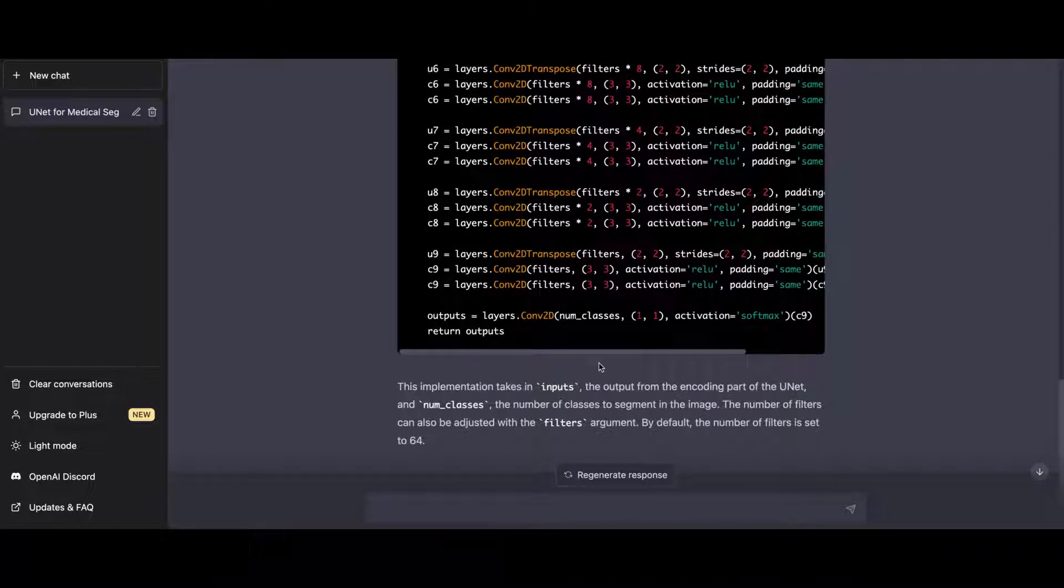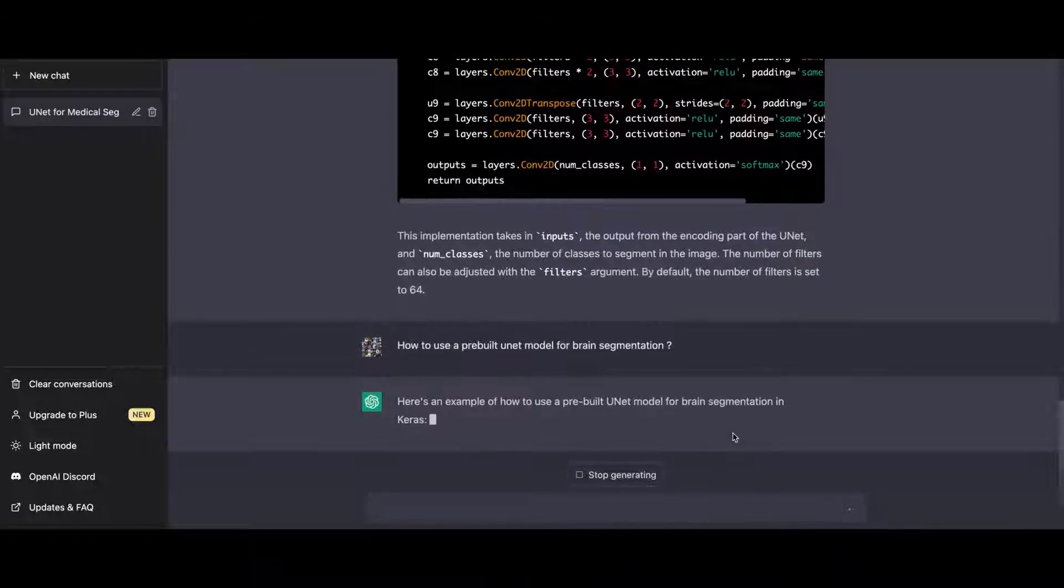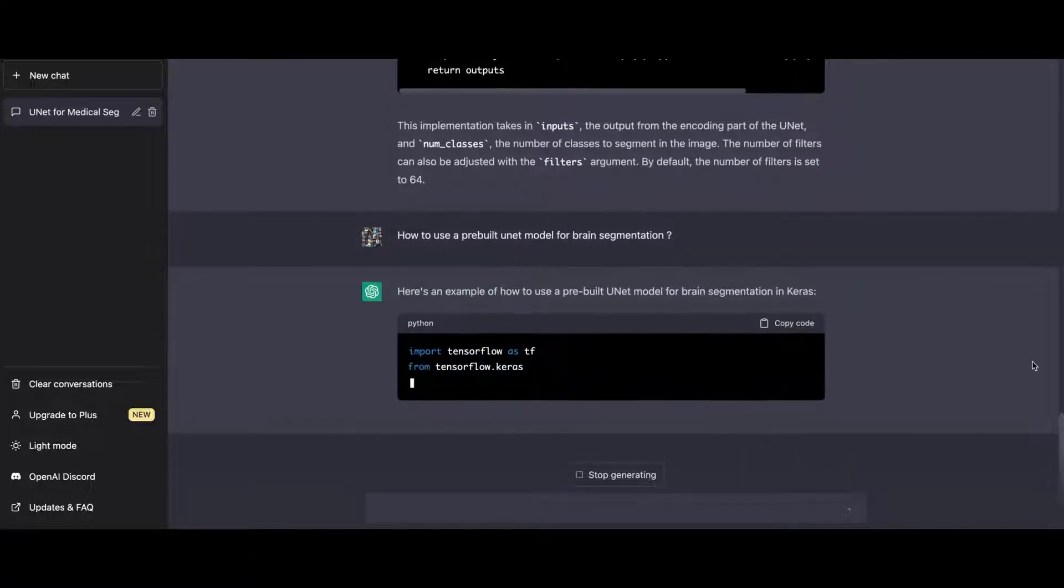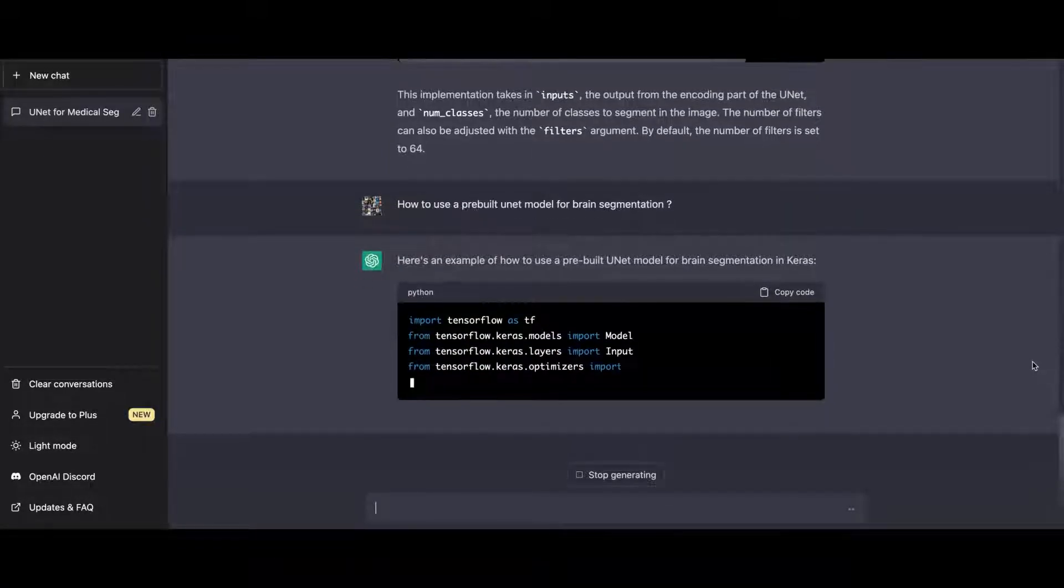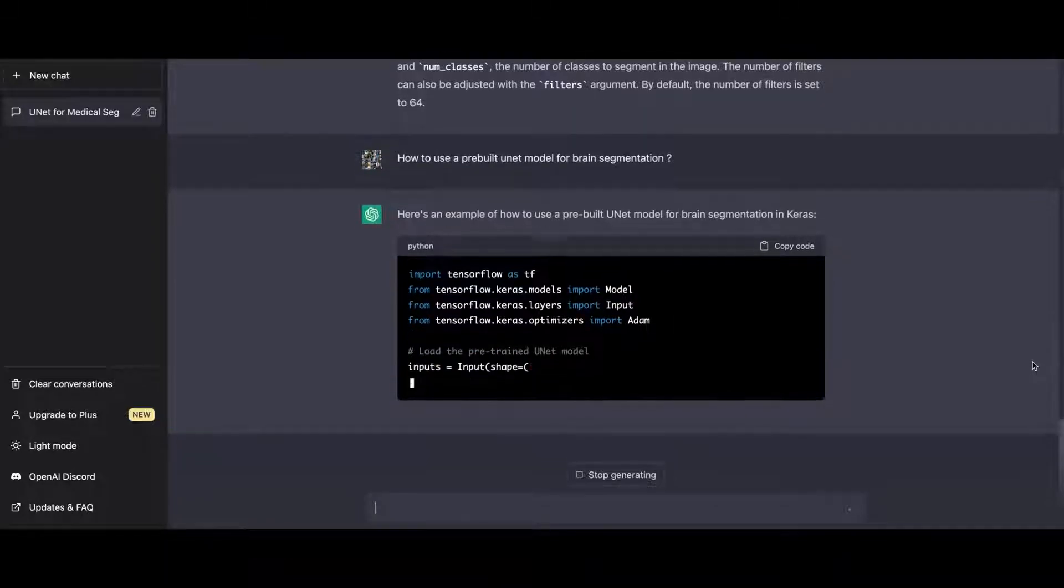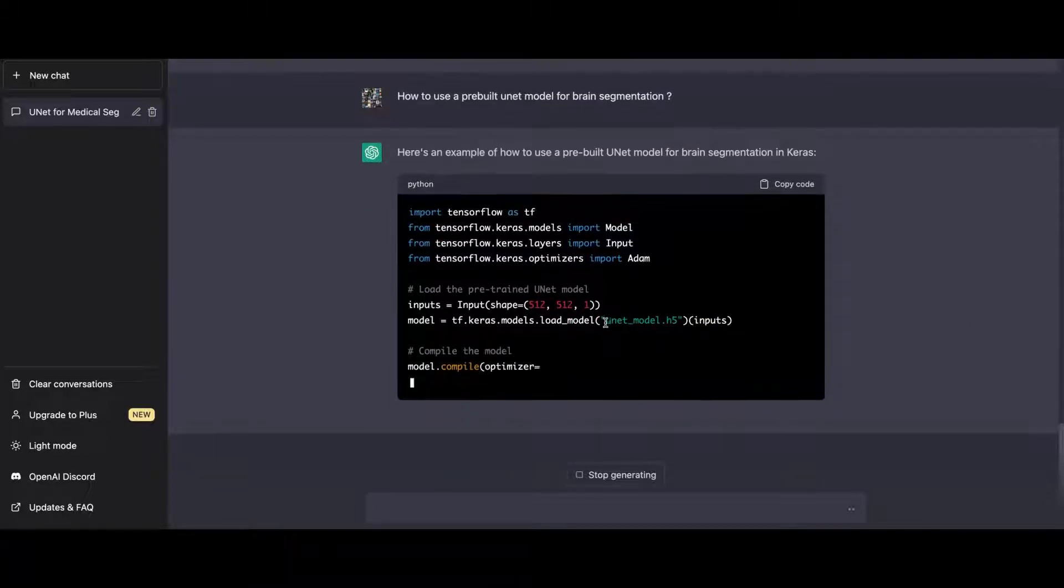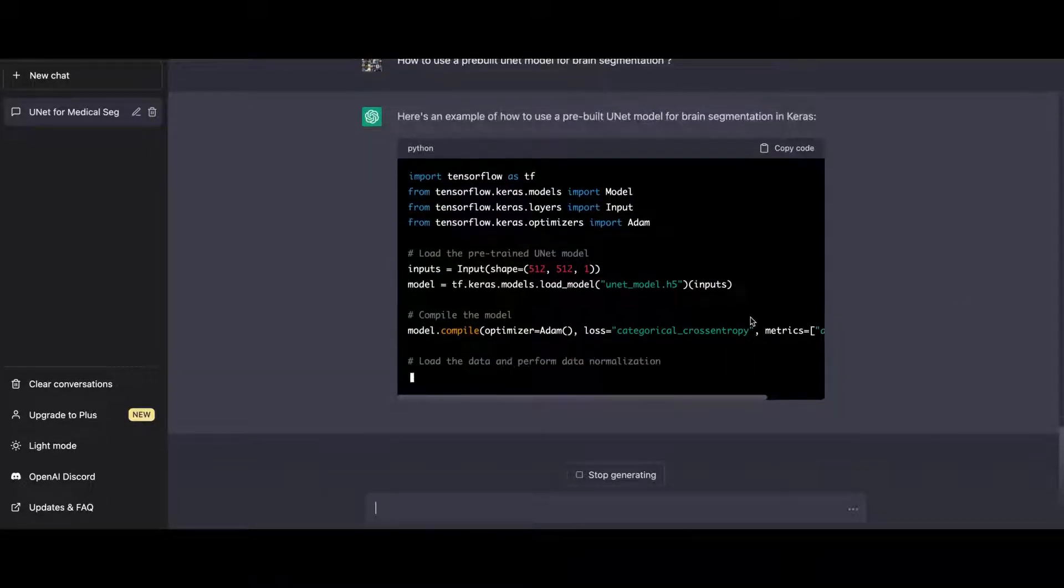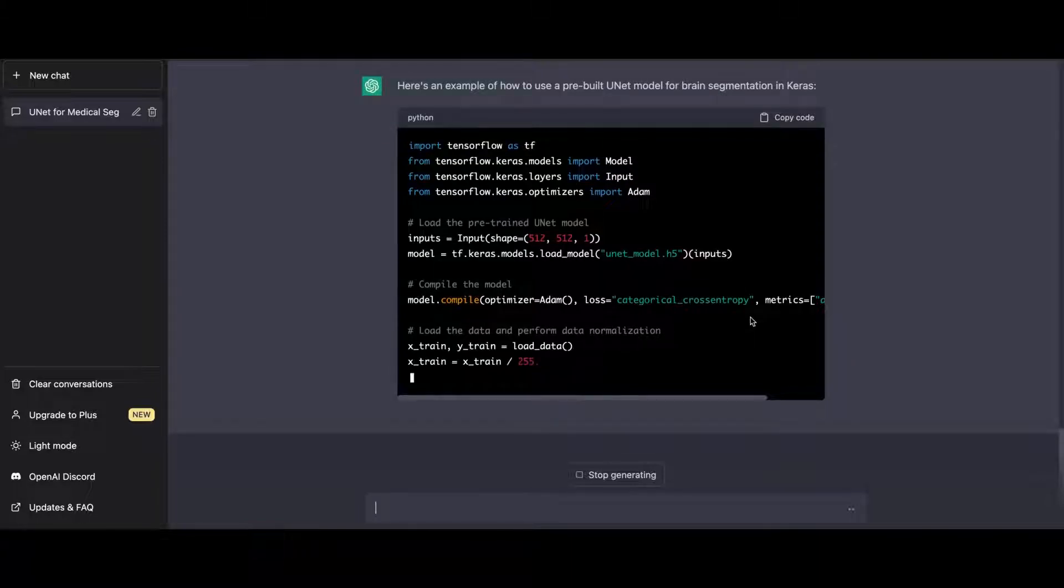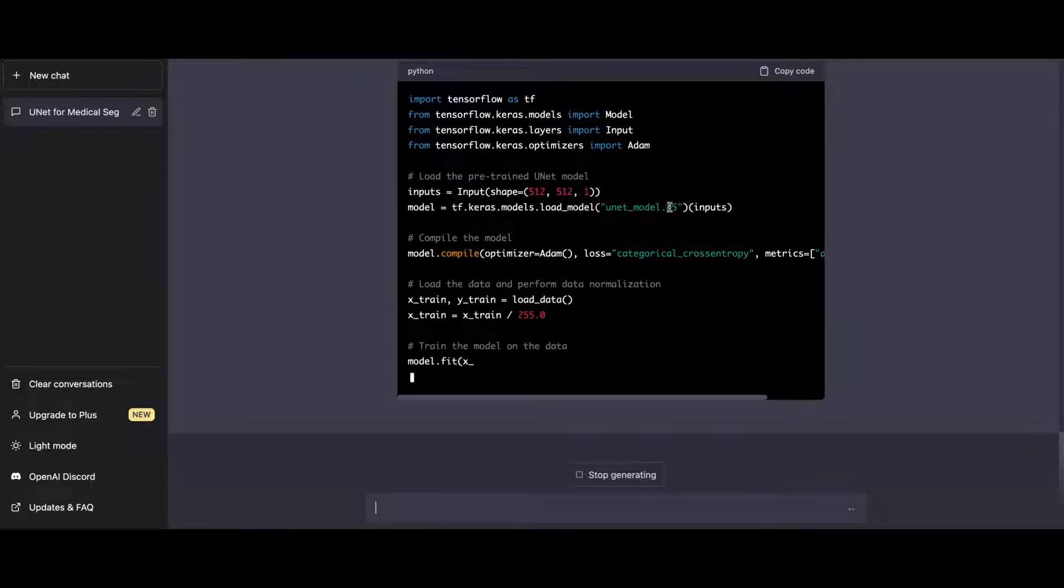Basically, it is applying the categorical cross-entropy. And then, building this whole code. In this example, assume that you have already trained a UNET model and saved it to a file. The model is loaded using the load_model function in Keras. You basically loaded the model. The input layer is defined in the pre-trained model, instantiated with the input tensor. You created this tensor.